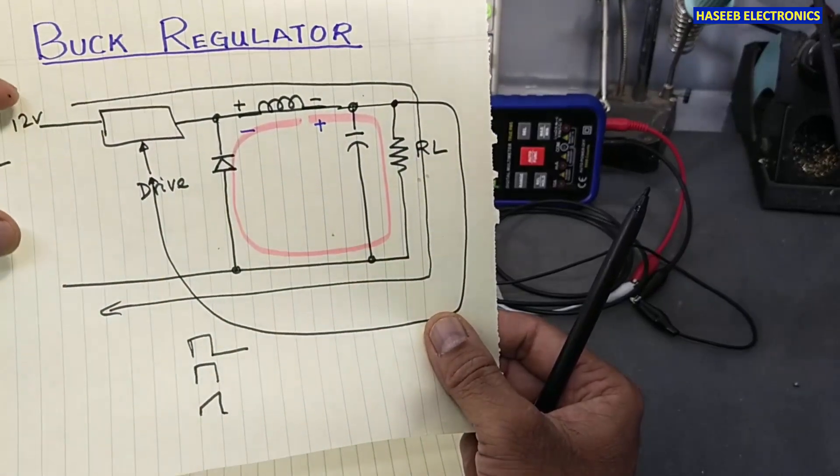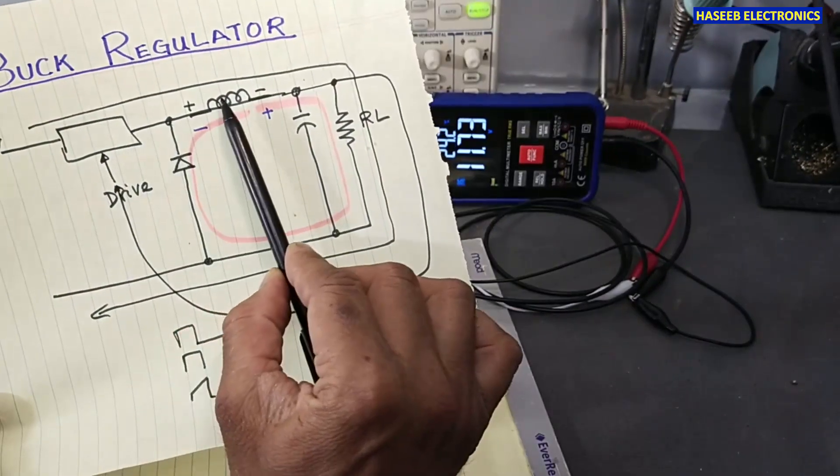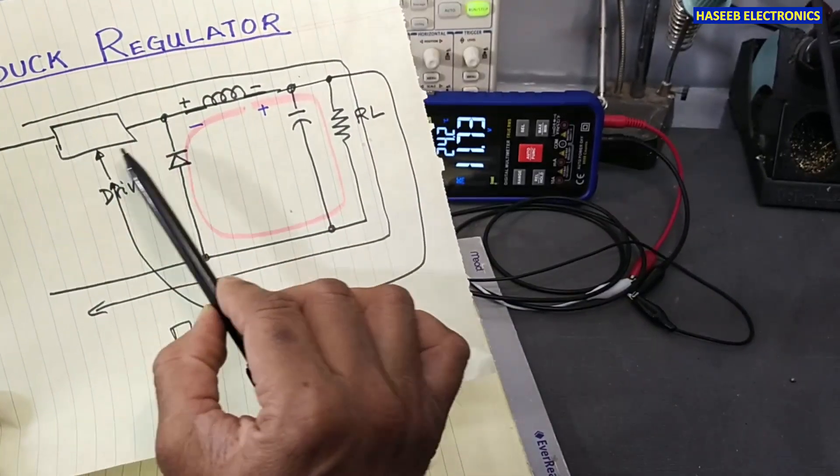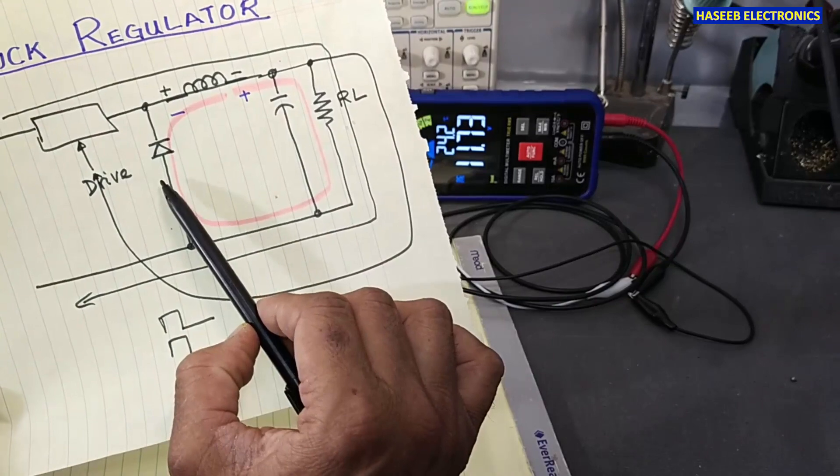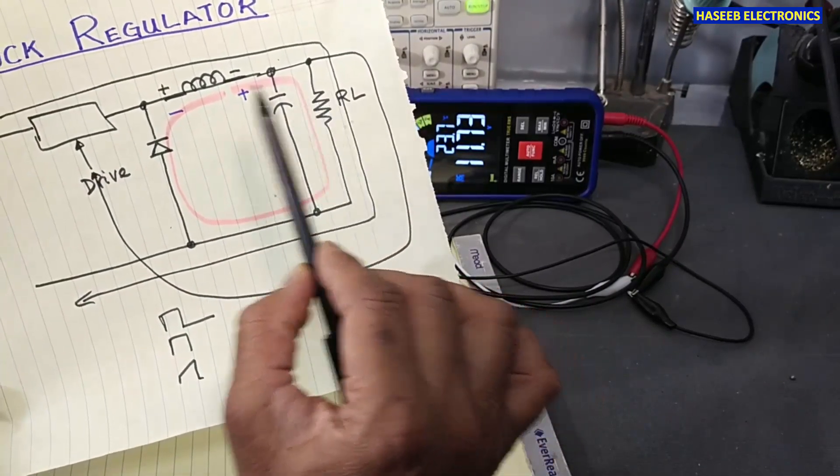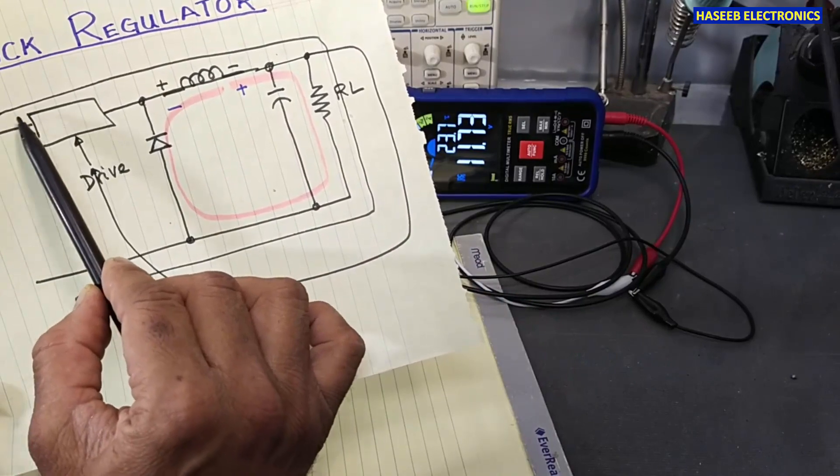Here, the inductor is connected after the MOSFET, after the switch, and we have a diode here, then a capacitor and load resistance. In the turn-on time, the current flows from this switch, inductor, load, and return path.